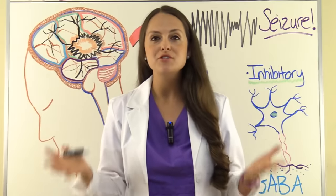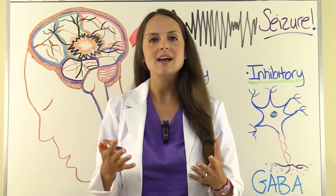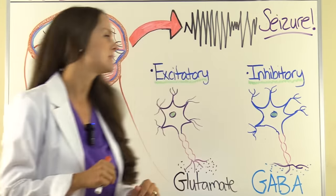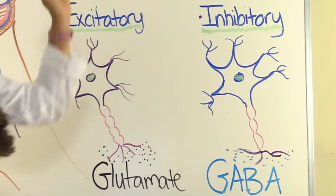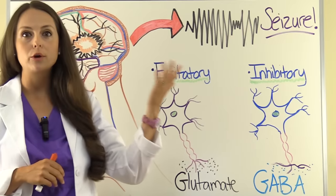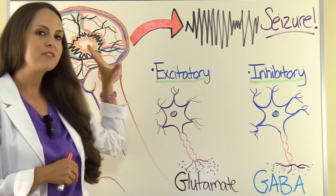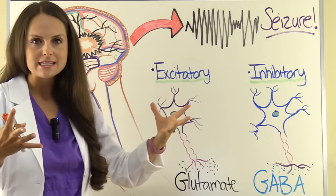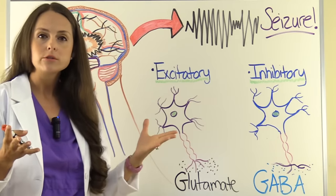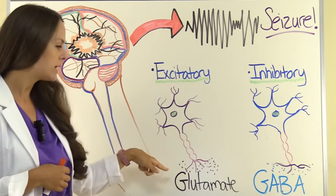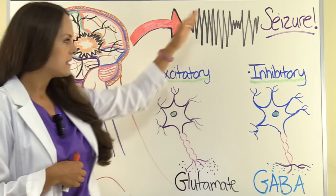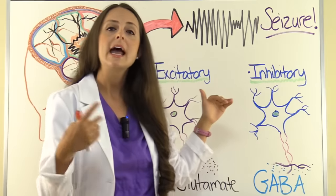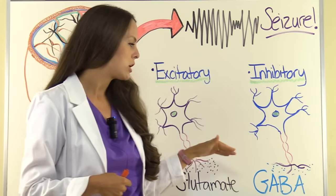In our brain we have neurons, which are tasked with handling and transmitting information. When talking about seizures, remember two types of neurons: excitatory neurons and inhibitory neurons. Excitatory neurons, when stimulated, will cause a response — they excite things — and release the neurotransmitter glutamate. Inhibitory neurons inhibit a response and release the neurotransmitter GABA.